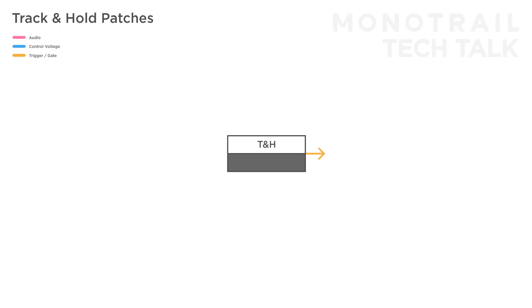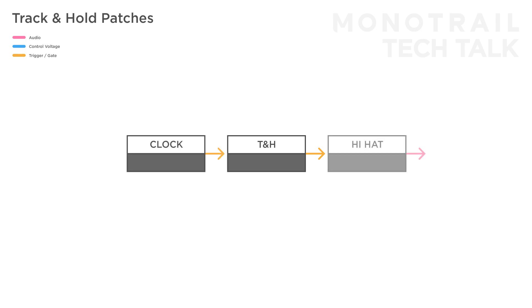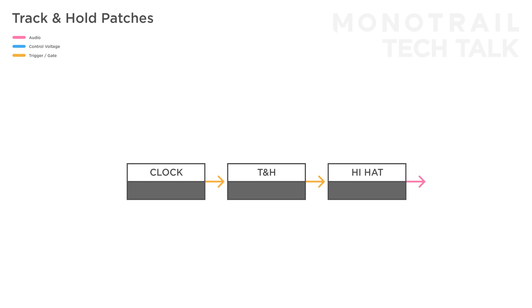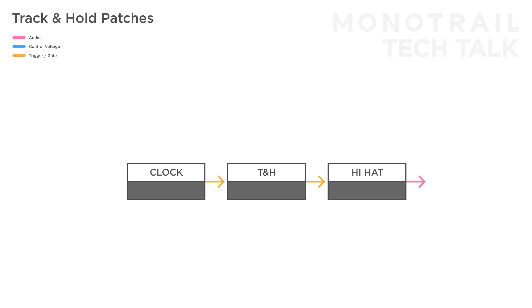You can also use track and hold to interrupt a trigger pattern. If you feed a steady clock to the track input, you can let that signal pass on to trigger something like a hi-hat. You can then experiment with different gate inputs to hold the signal and interrupt the pattern — something like an unsynced square wave LFO, but smooth random voltages also work great to create random gated patterns.